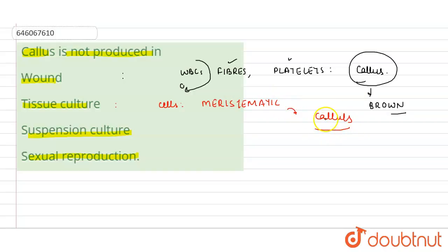In suspension culture, we take cells and make a culture in the agitated medium, like centrifugation method is being used. In this also, when cells start dividing, they form a callus.